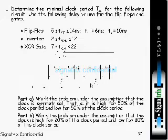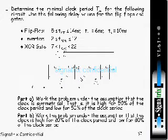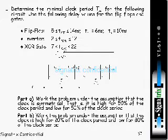Now we are going to see the second problem. Here we have totally four flip-flops. The first flip-flop has the clock directly, the second flip-flop has an inverted clock, the third flip-flop has a normal clock, and the fourth flip-flop has an inverted clock. Additionally, the Q3 output is fed back to D0, and in the feedback path we have an XOR gate.